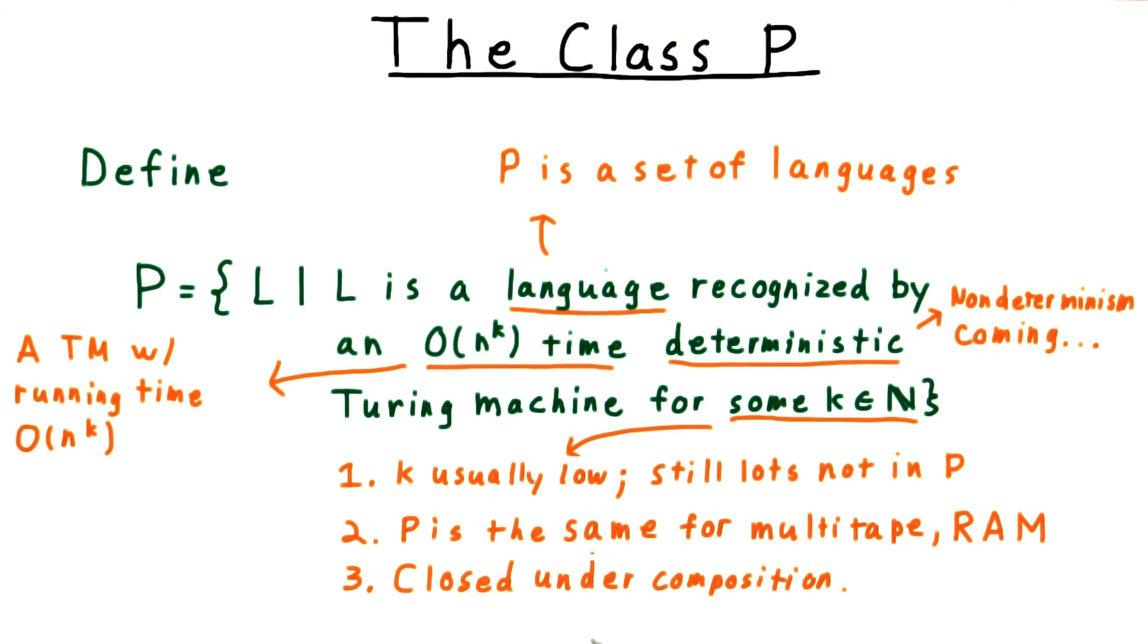In other words, if we do something efficient a reasonably small number of times, then the overall solution will be efficient. P is exactly the smallest class of problems containing linear time algorithms and which is closed under composition.